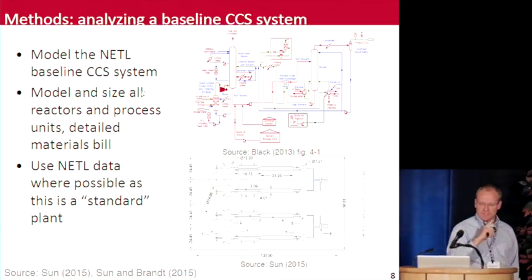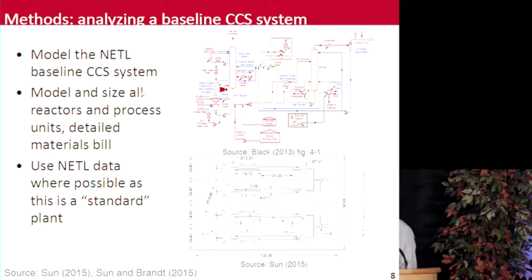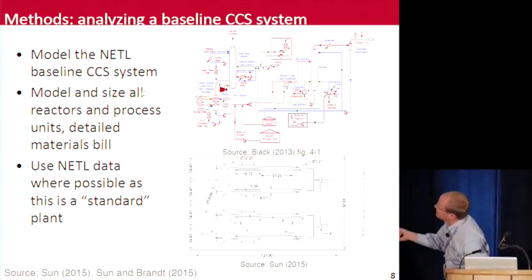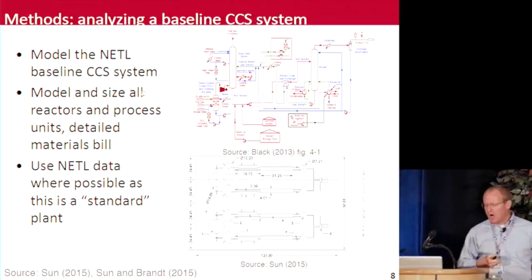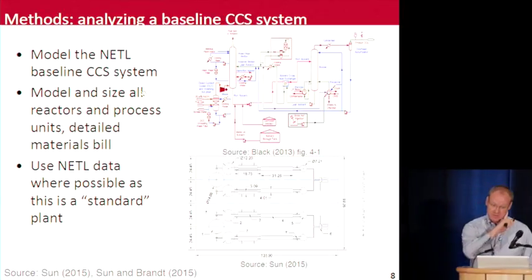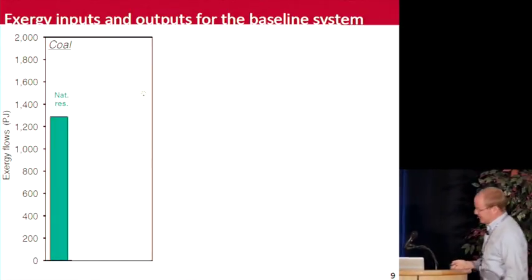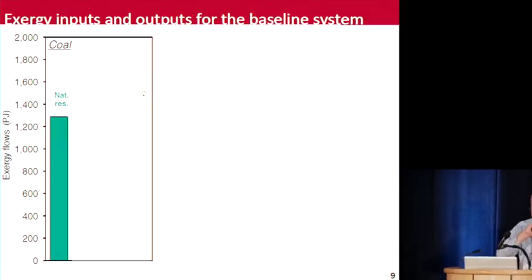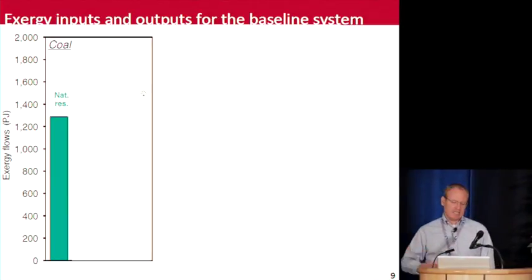My student Yu Chi Soon analyzed a baseline CCS system — the NETL baseline from the National Energy Technology Lab. We modeled and sized all the reactors in great detail to generate a detailed materials bill, using chemical engineering models to parameterize the reactors and calibrating to the standard NETL plant, which is commonly used in the CCS world. The baseline system without CO2 capture — just normal coal — takes in about 1,300 petajoules of natural resource exergy over the plant's life. The vast majority is chemical exergy of coal, plus exergy of iron ores and other input materials.